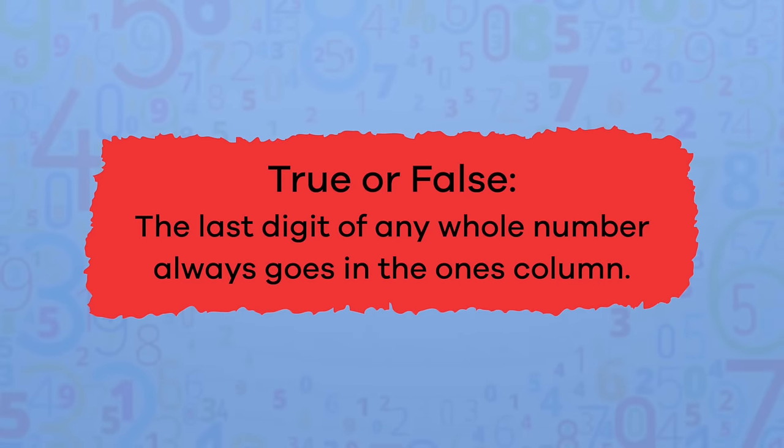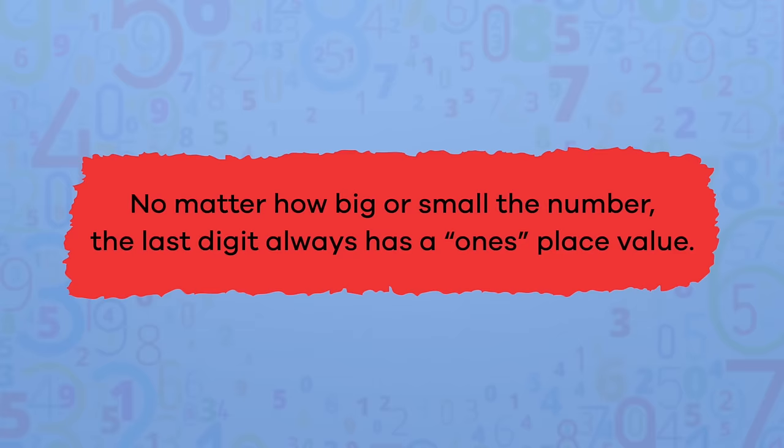True or false: the last digit of any whole number always goes in the ones column. True! No matter how big or small the number, the last digit always has a ones place value.